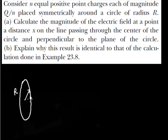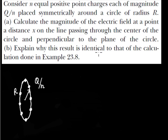Let me make the diagram first. This is the circle with radius capital R. The charges are symmetrically placed — one charge here, another here, another here, symmetrically opposite. The magnitude of each charge is Q/n. We need to calculate the electric field at a point at distance x on the line passing through the center of the circle, perpendicular to the plane of the circle.